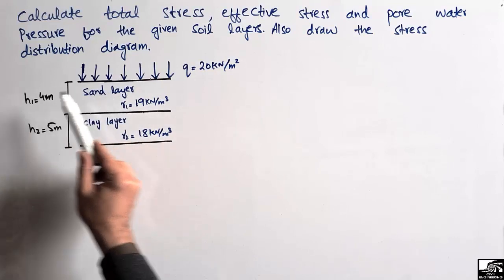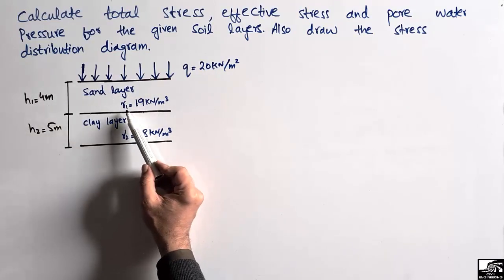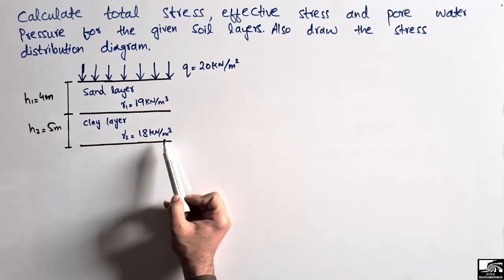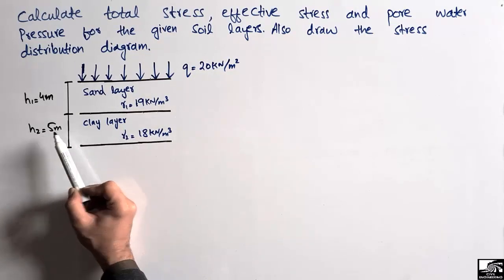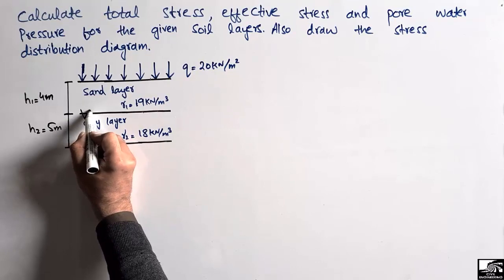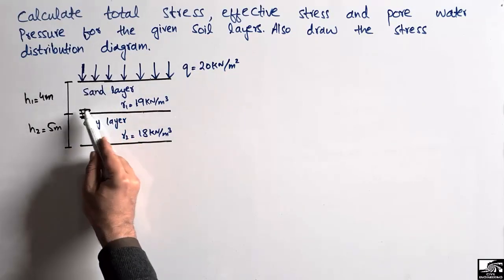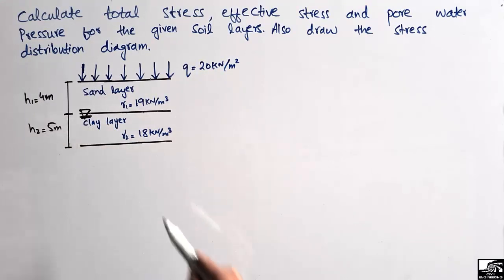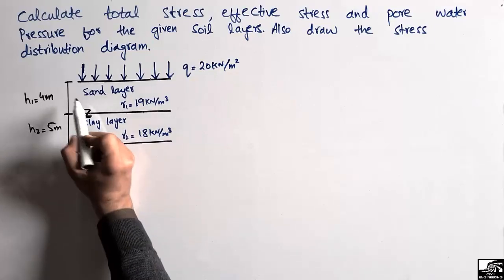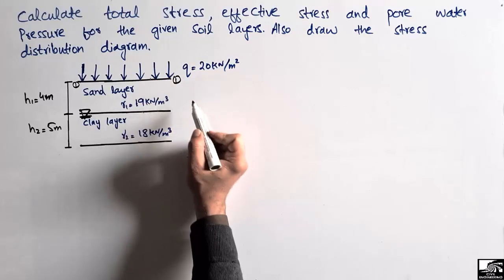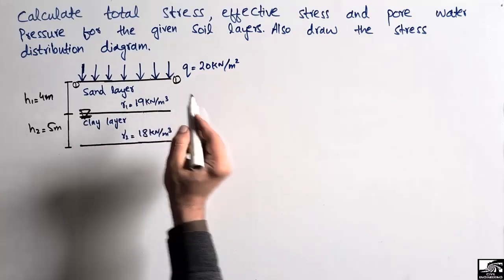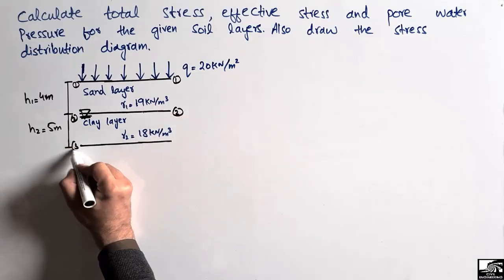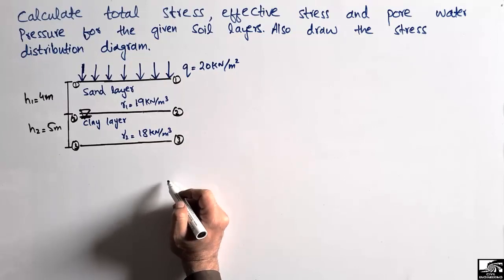The first is the sand layer, which has a depth of 4 meters and a unit weight of 19 kN per cubic meter. The second is a clay layer with a unit weight of 18 kN per cubic meter and a depth of 5 meters. There is a water table at the bottom of the sand layer, or at the top of the clay layer. We label the sections: section 1-1 at the top, section 2-2 at the bottom of the sand layer, and section 3-3 at the bottom of the clay layer.